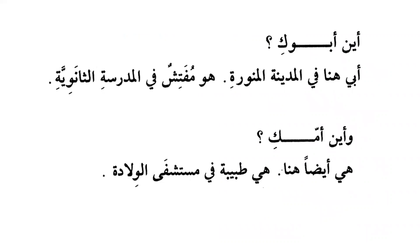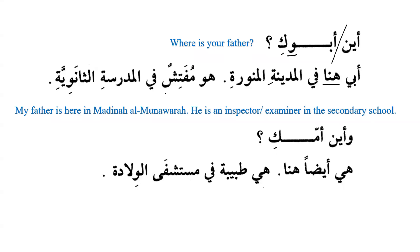Aina abuki — 'Where is your father?' Whenever we have the word abun and it is marfu', waw is added to it. She says: Abi huna fil Madinati al-munawwara — 'My father is here in Madinah al-Munawwarah.' We know huna is a zarf, an adverb used to talk about place. He is a mufattish — an inspector, or examiner in the secondary school. The word mufattish comes from taftish, meaning searching.